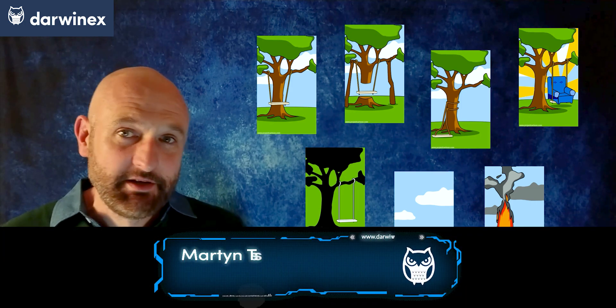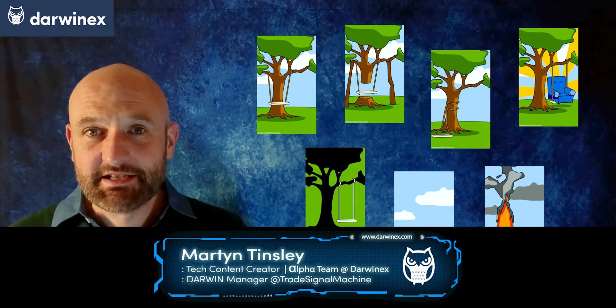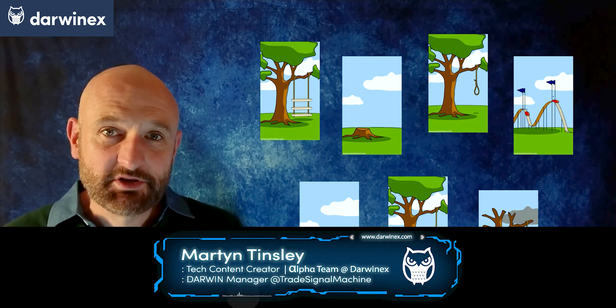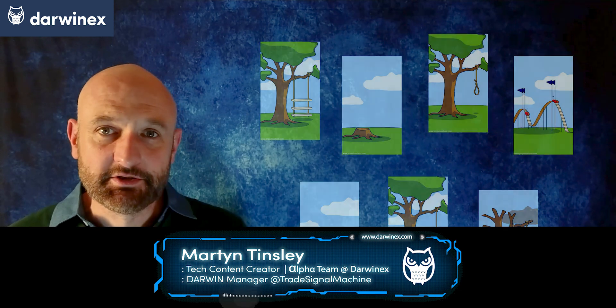So following on from last week's episode let's now move on to the next seven tree swing illustrations and look at how they can be used to help us as algo traders.